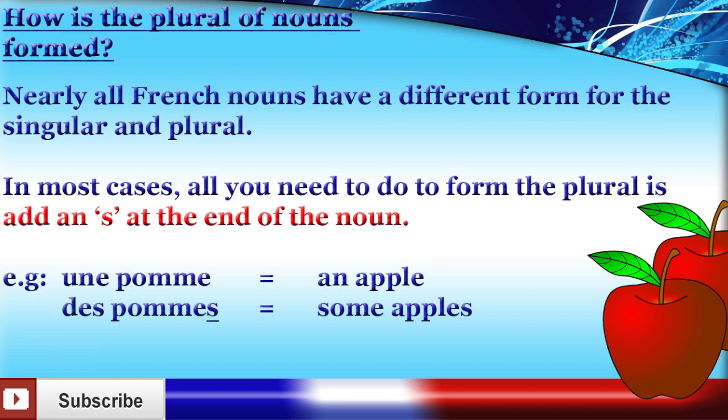Nearly all French nouns have a different form for the singular and plural. In most cases, all you need to do to form the plural is add an S at the end of the noun. For example, une pomme, an apple,